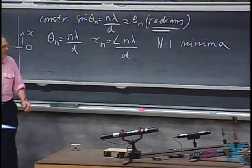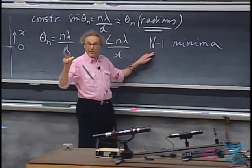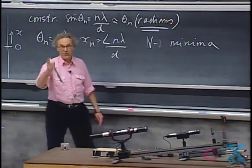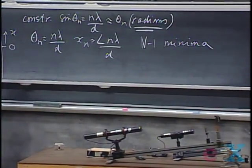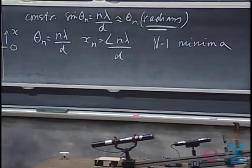What is not intuitive: if you have N sources, between two major maxima — between the maximum at N equals zero and the maximum at N equals one — there are N minus one minima, meaning complete destructive interference. If capital N is two, which we did last time, two minus one is one. That was correct: we had only one zero between the two maxima.